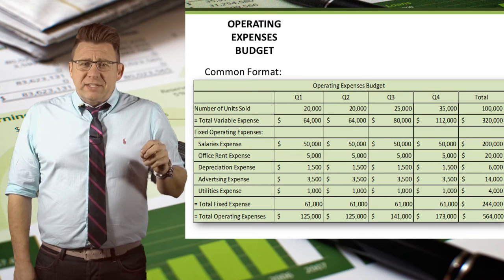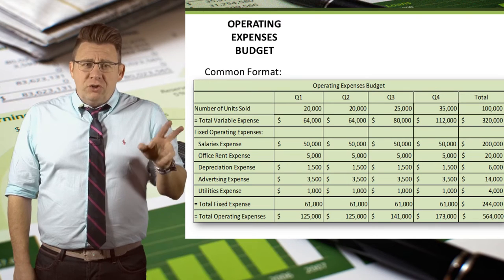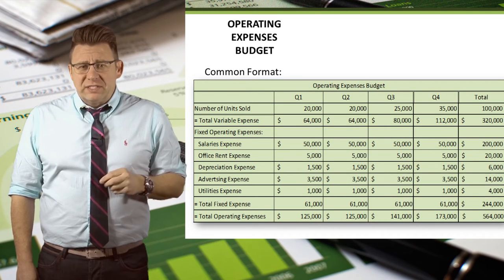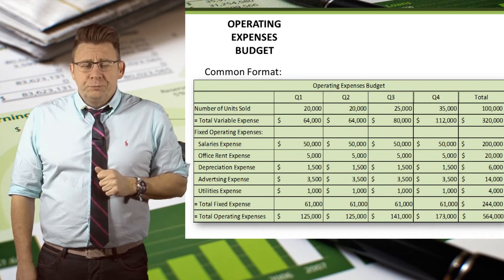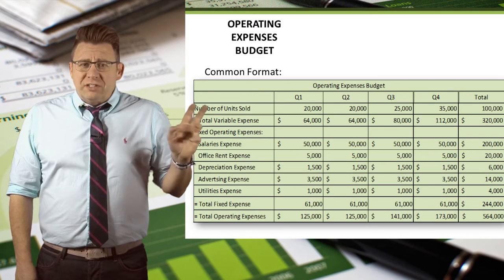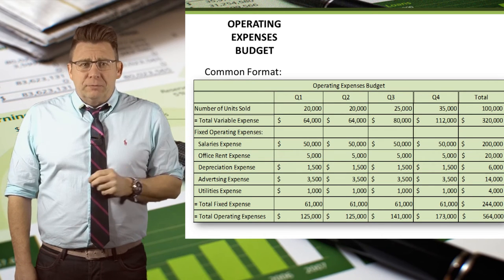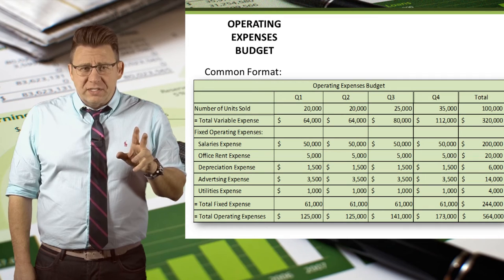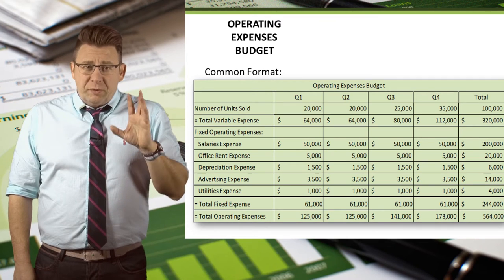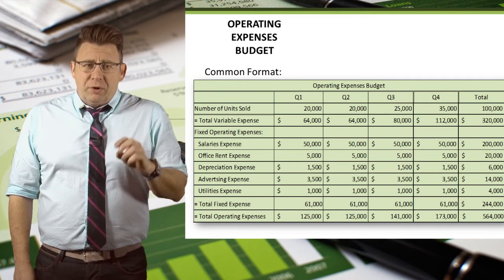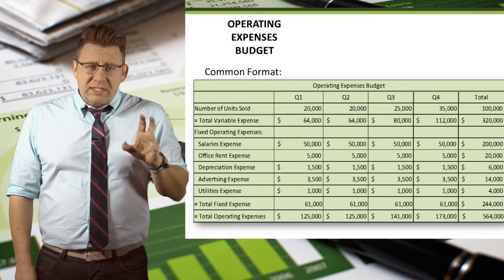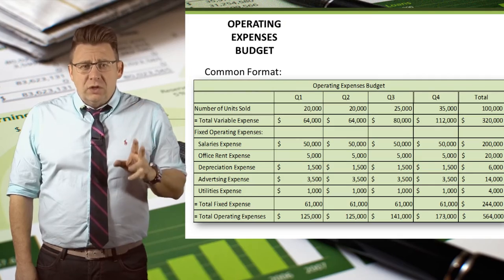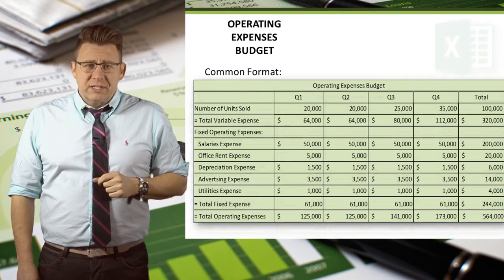Fixed operating expenses are usually just given amounts since they don't vary with sales volume. I have assumed these numbers and listed them here. Total variable operating expenses plus total fixed operating expenses equals our total operating expenses.